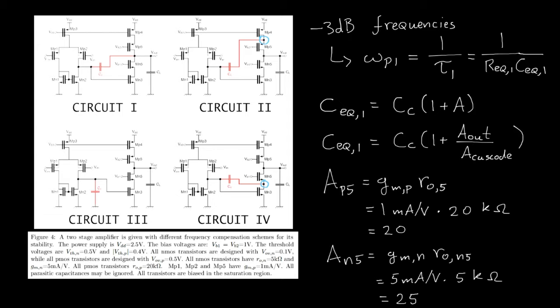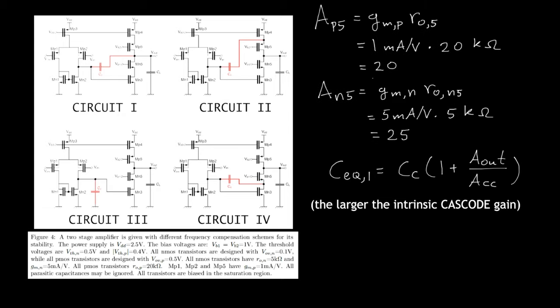That means that for circuit two, the gain at the output is weakened by a factor of 20 at this node. And for circuit four, the gain at the output is weakened by a factor of 25 at this node. So the larger this gain is, the smaller your equivalent capacitance will be. And as a result, the larger your 3 dB frequency will be.